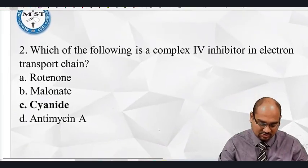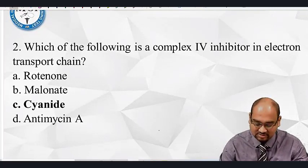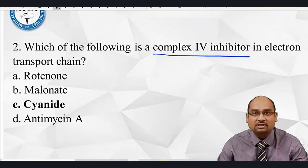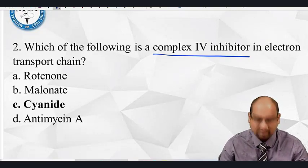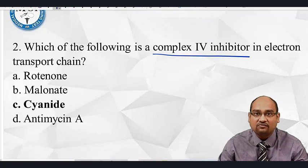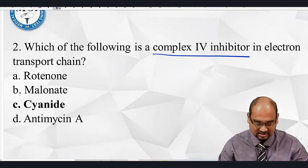Now the next MCQ that was asked from electron transport chain, and this time they asked about the complex four inhibitor. This was an expected question, beta. We had discussed this several times. Please remember the four important ones from complex four inhibitors: cyanide, carbon monoxide, hydrogen sulfide, and azide.